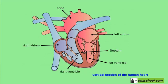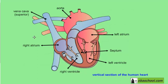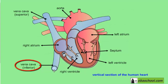We also have the vena cava — we actually have two vena cavas. We have the superior vena cava that collects deoxygenated blood from the organs of the body and takes it to the heart. The superior vena cava takes blood from organs above the heart, such as the head. We also have the inferior vena cava that takes deoxygenated blood from organs lower than the heart, such as the legs.